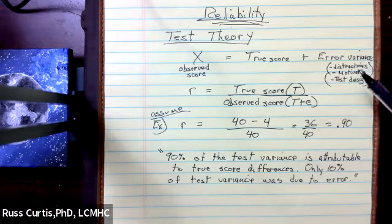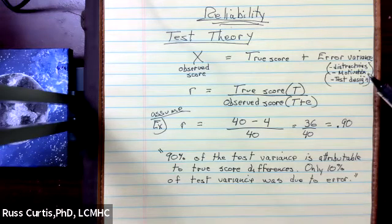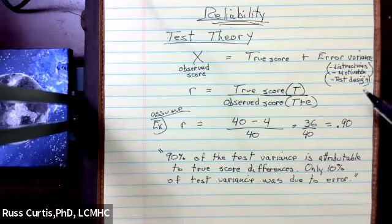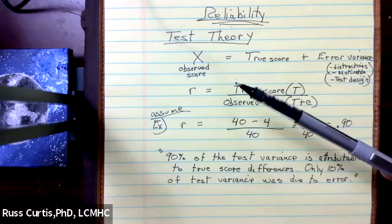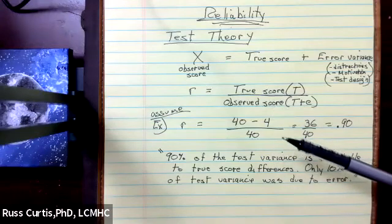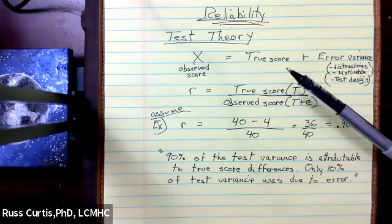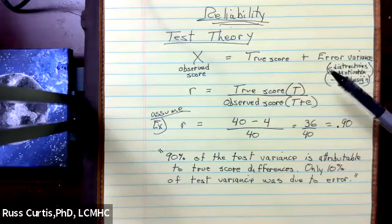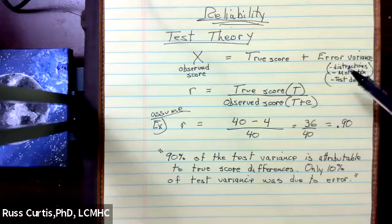And there's going to be error in every test, because we can't control for distractions and a client's motivation. We try our best with test design. So the observed score is what we actually see. Let's say somebody scored a 108 on their IQ. They would say that, all right, well, there is a true score, but that observed score is true plus the error that's involved.